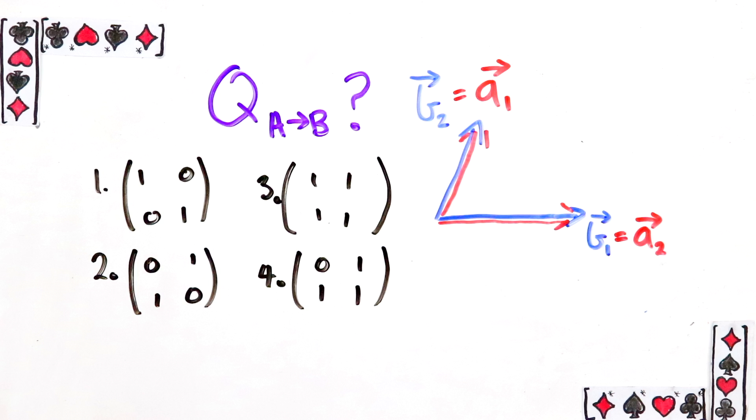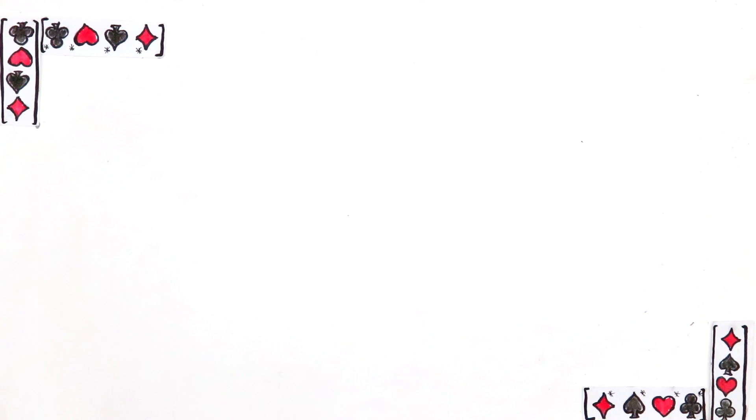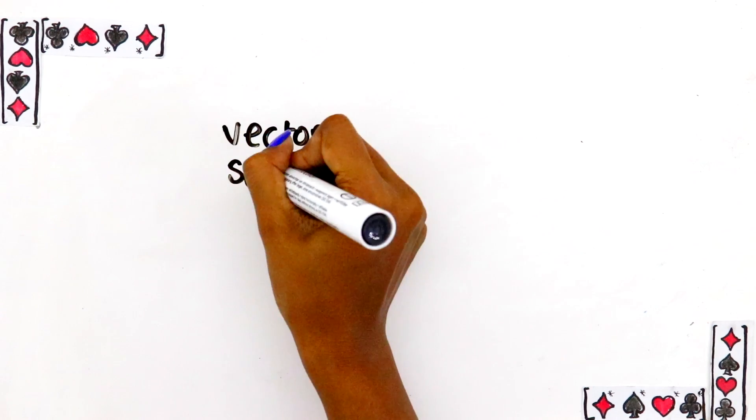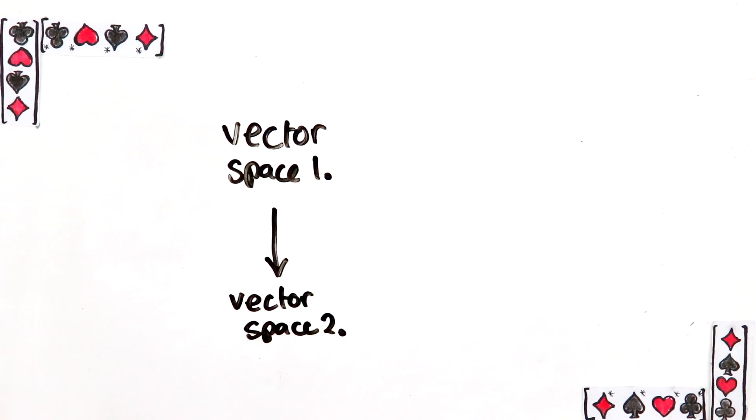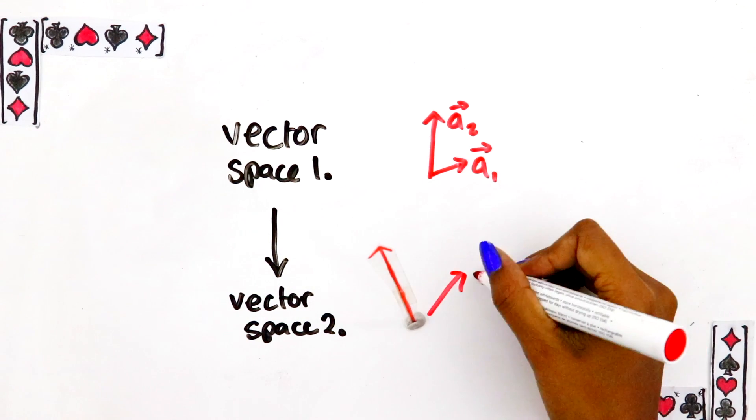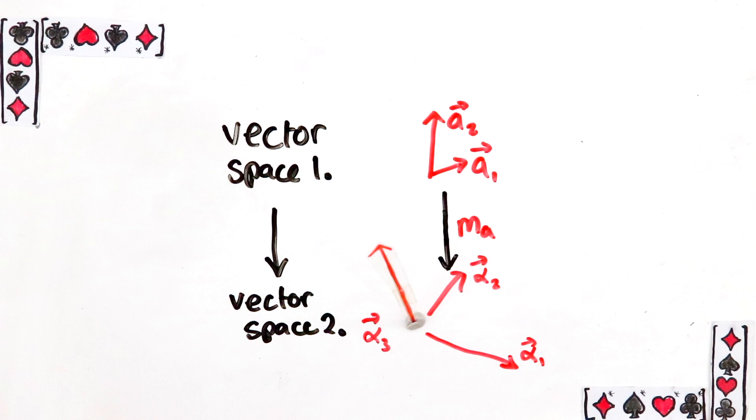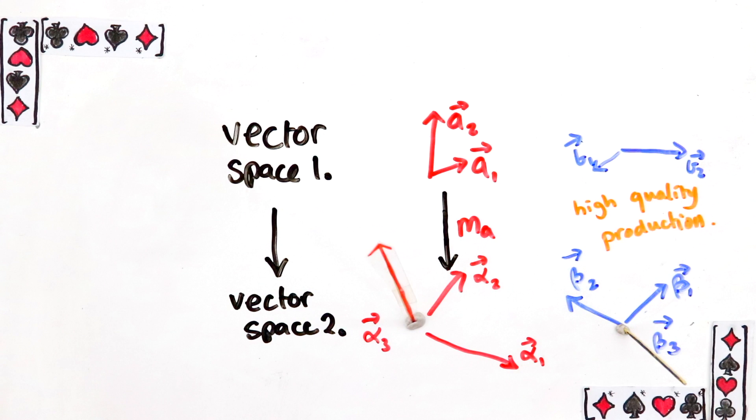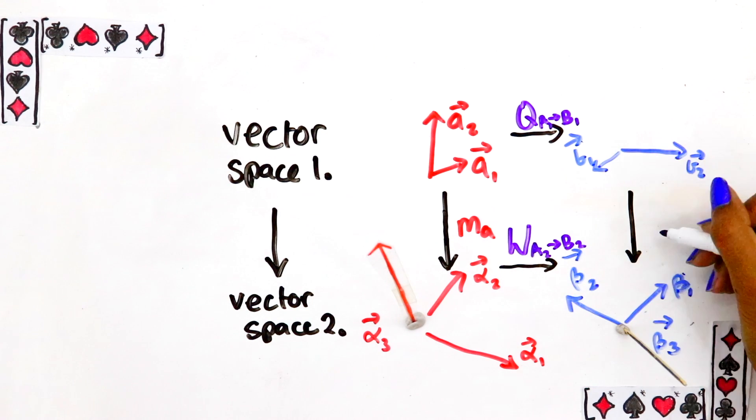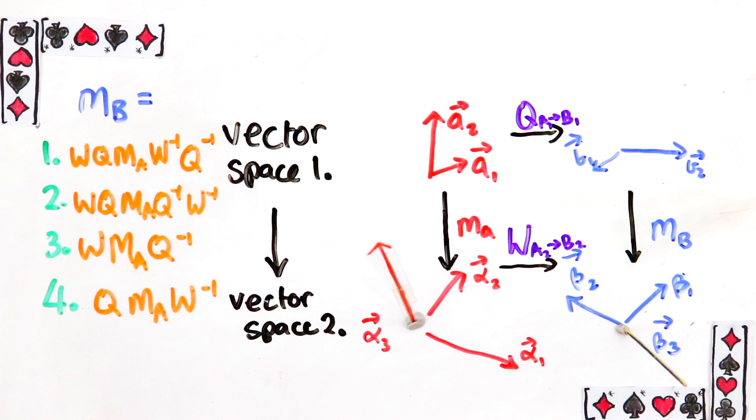Question 2. I did the simple case where Alice's matrix is square. What happens in the general case where her matrix is from vector space 1 to vector space 2? She has this basis for the first vector space and this one for her second one. Bob has these basis. And say Q and W are the change of basis vectors between these spaces. What is the formula for Bob's version of this matrix? Here are your options and again, put it in the poll.